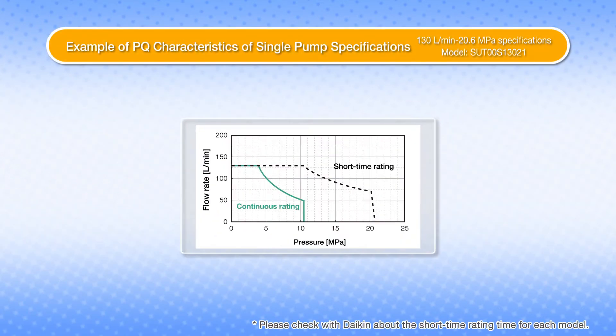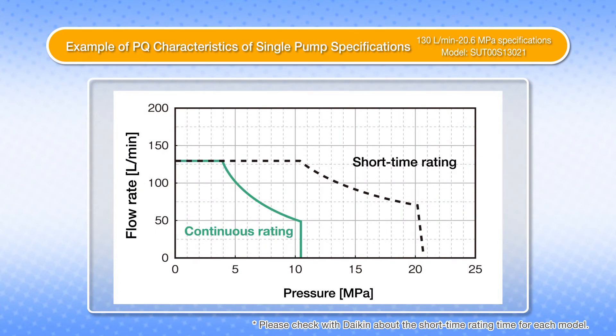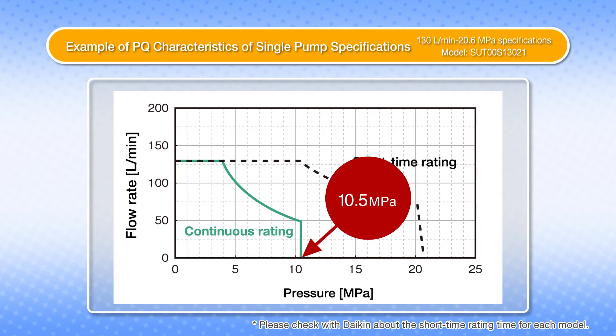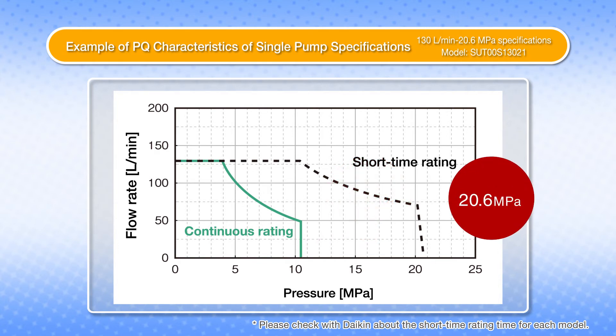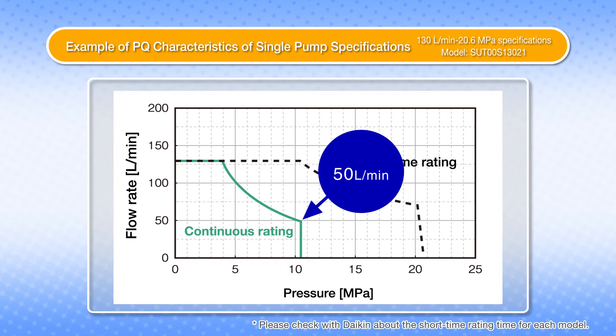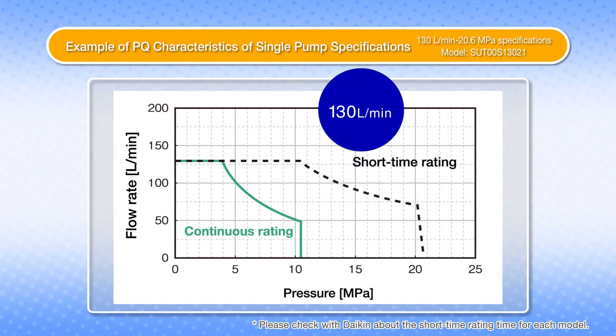For example, with a single pump unit with specifications of 130 liters per minute and 20.6 MPas, although the maximum pressure at the continuous rating is 10.5 MPas, this can be boosted to 20.6 MPas for a short time. It's also possible to increase the maximum flow rate of 50 liters to 130 liters when running at 10.5 MPas.